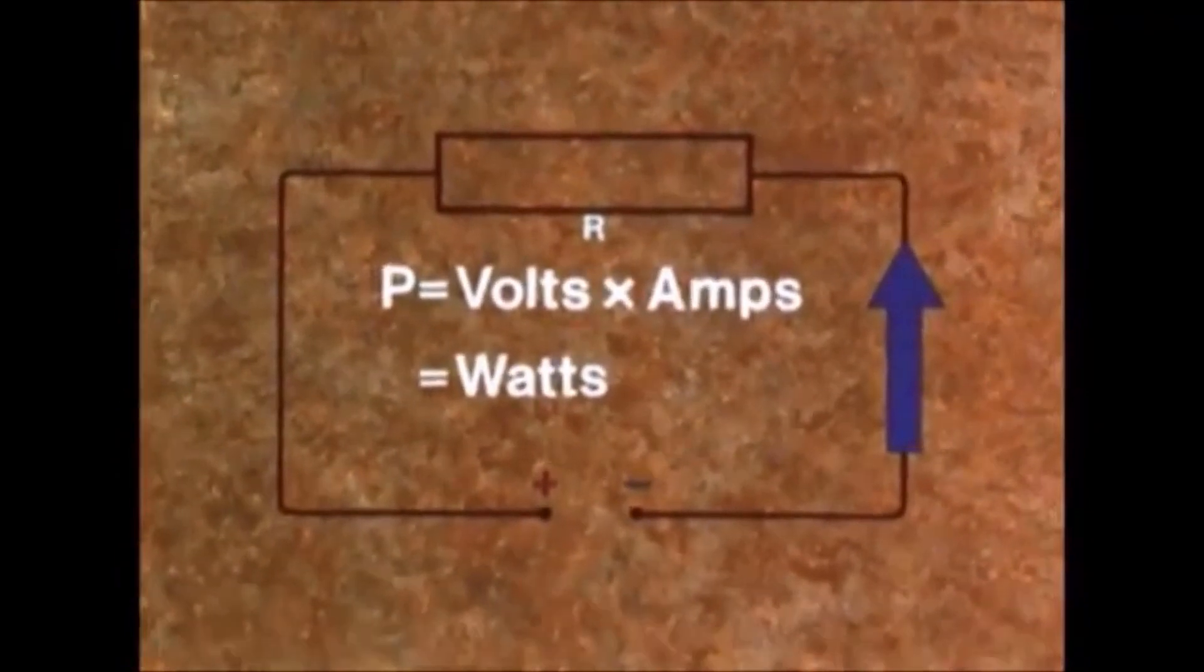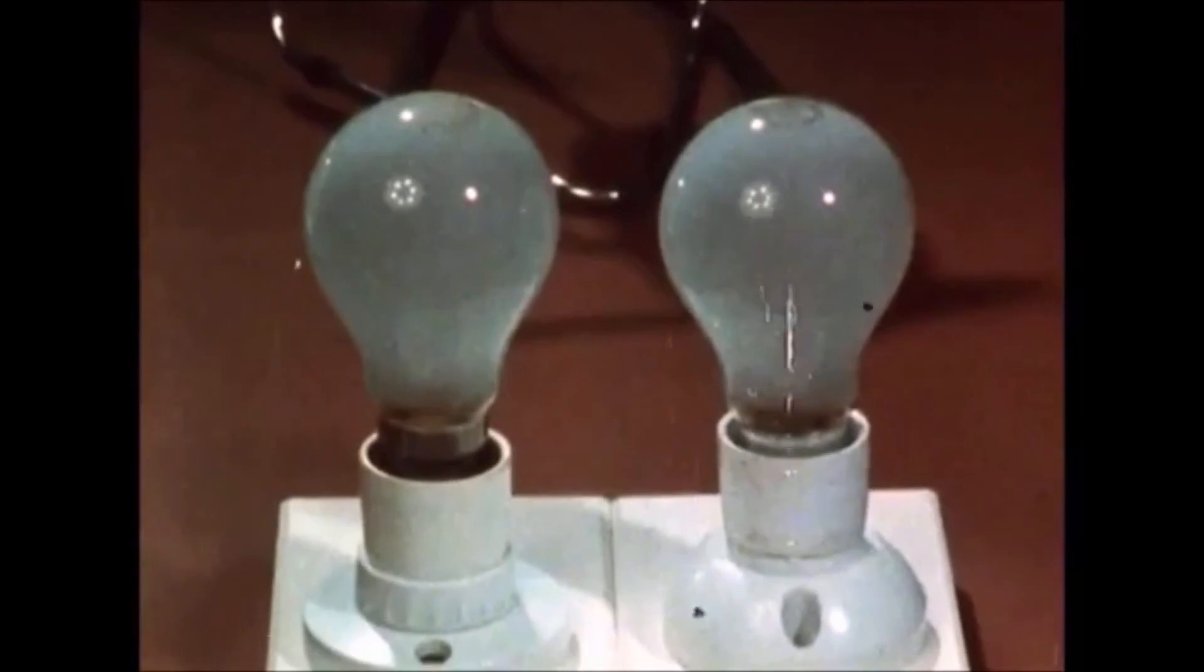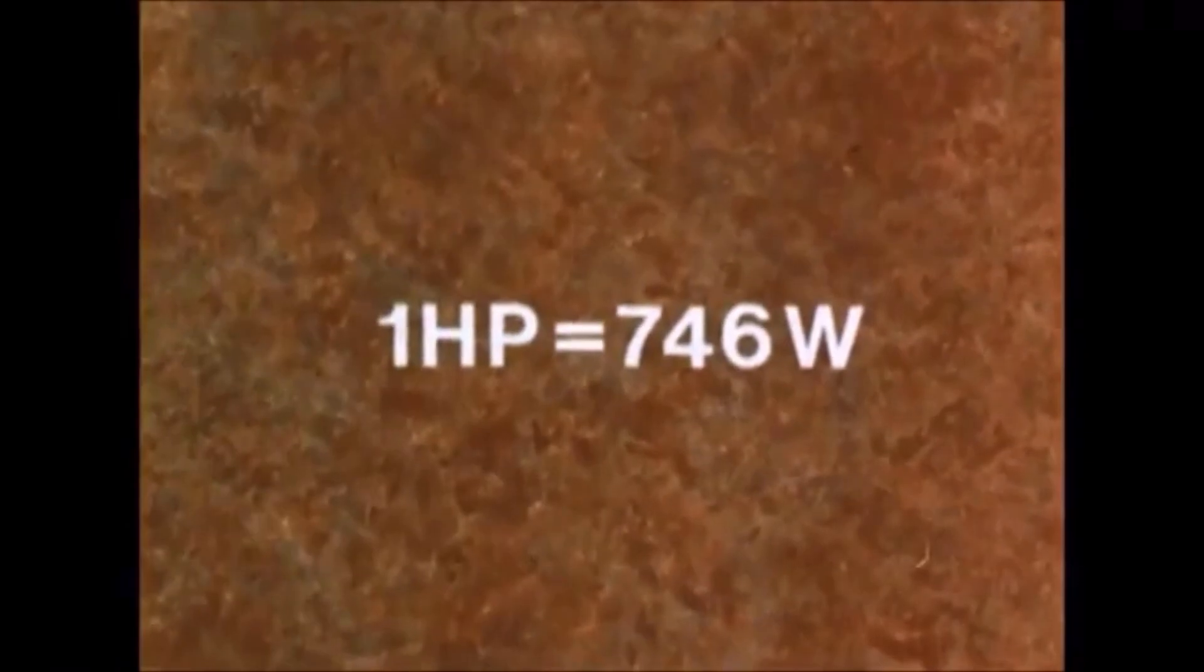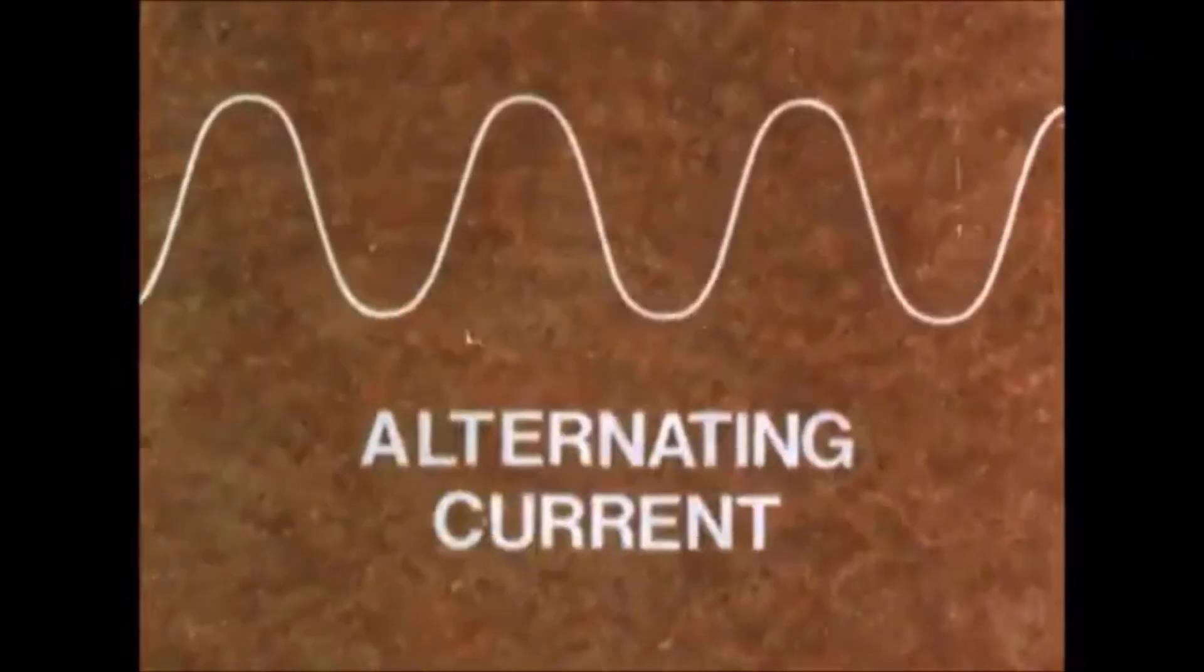We saw that electrical equipment, including resistors, have a power rating which indicates the rate at which they will change electrical energy into some other form of energy. And we saw that there is a relation between watts and horsepower. In the next part, we will discuss the subject of alternating current.